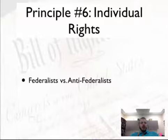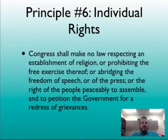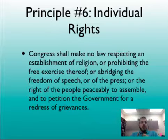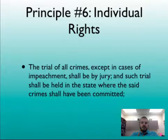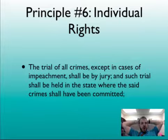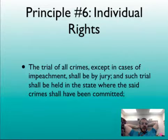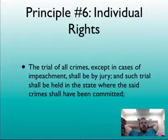Finally, principle number six is individual rights. Remember the debate between Federalists and Anti-Federalists? Federalists liked the Constitution, but many Anti-Federalists felt it would create a government that was too strong — one that would take away their rights. This is why the First Amendment was added, and why the whole Bill of Rights was added. The First Amendment lays out very specifically rights that the Founding Fathers found important, some of which were taken away by the British. Even in the main part of the Constitution, Article III guarantees a trial by jury, unless you're a public official being impeached. Remember what had happened to smugglers under British rule — they were sent to vice-admiralty courts in Canada or England, which were not a jury of their peers. Individual rights, along with all of these other principles, are in the Constitution and make up the fundamental core of American government.